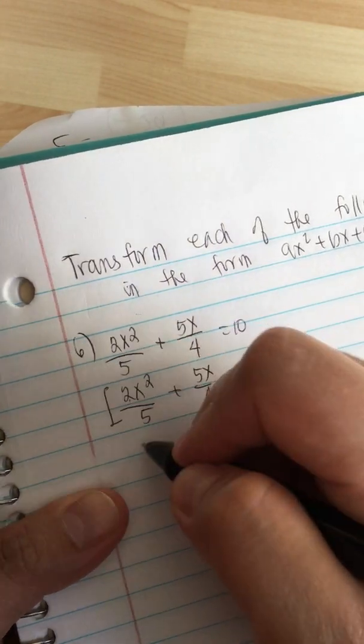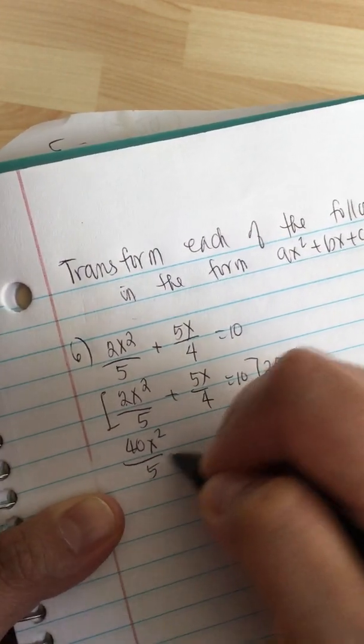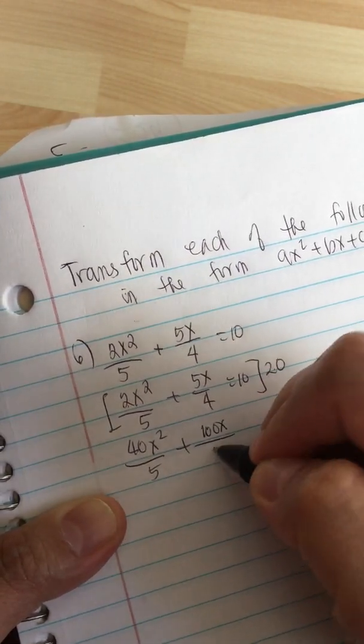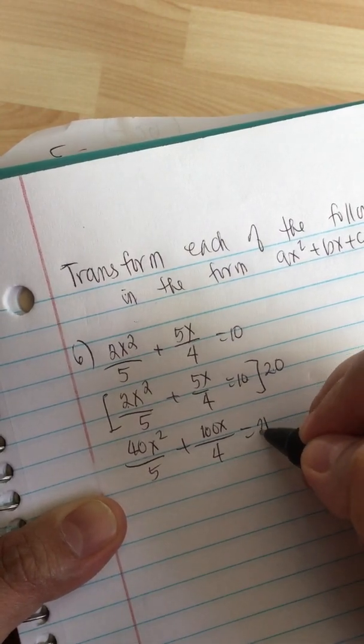20 times 2 equals 40x squared over 5, plus 5 times 20 is 100 over 4, equals 10 times 20 which is 200.